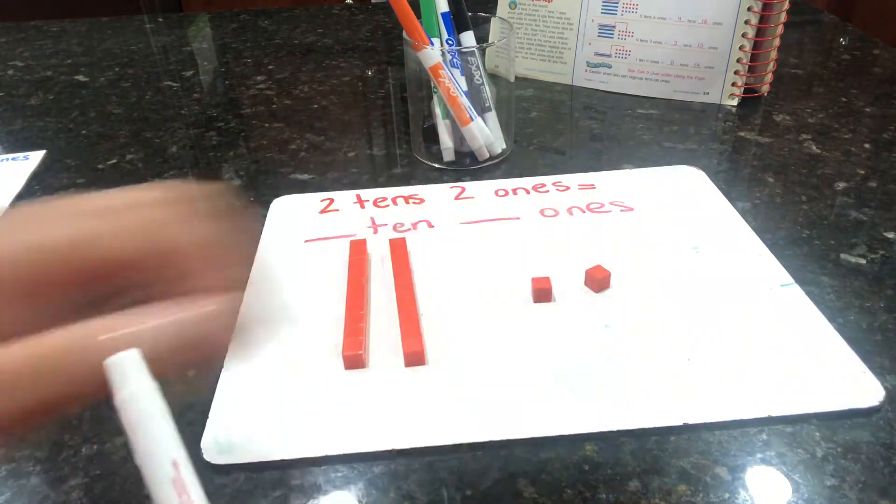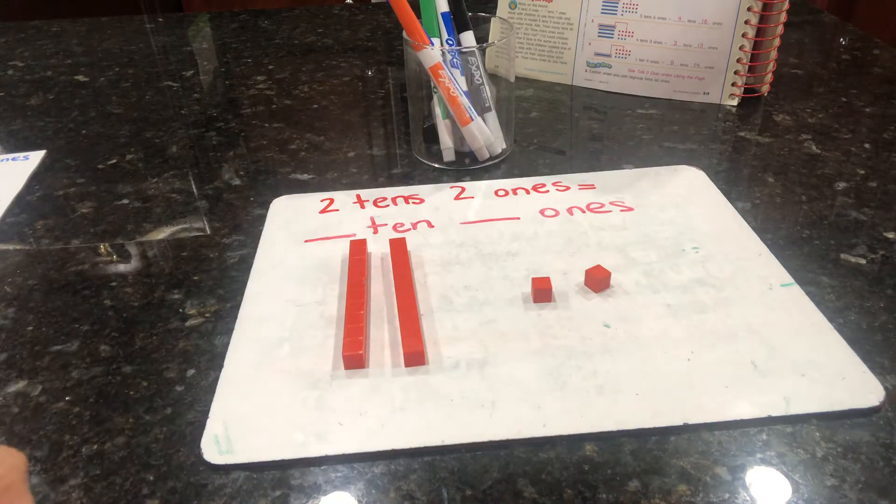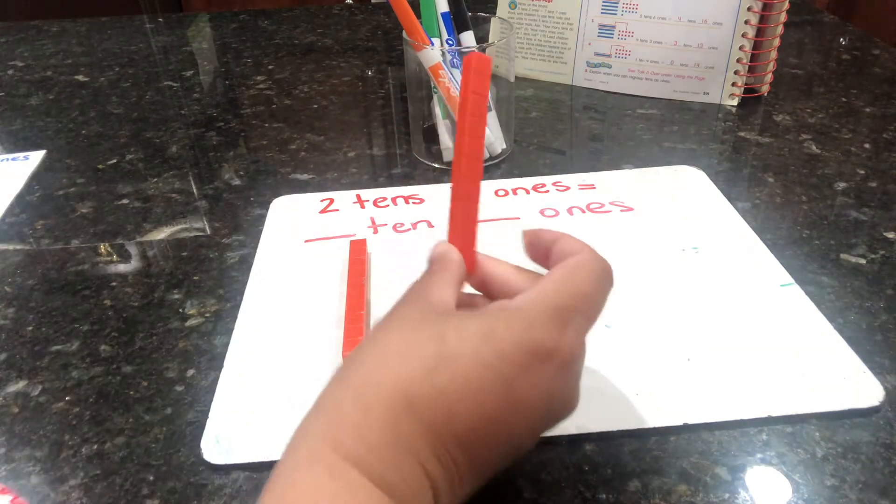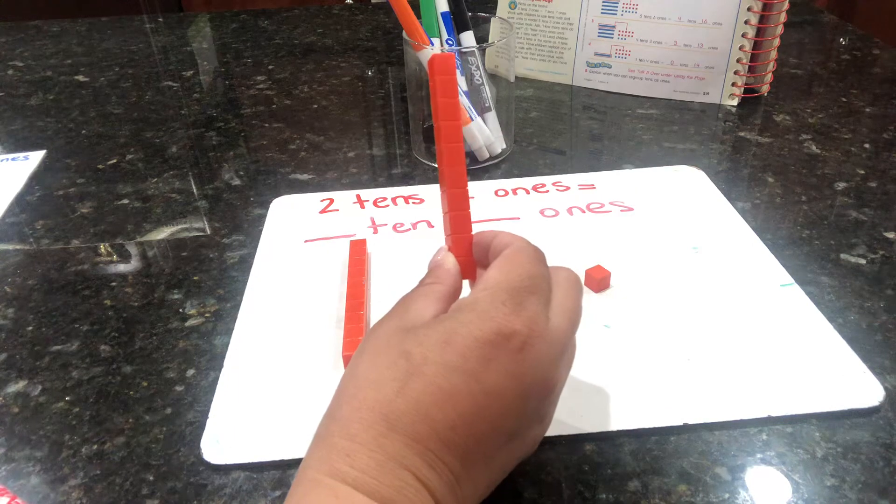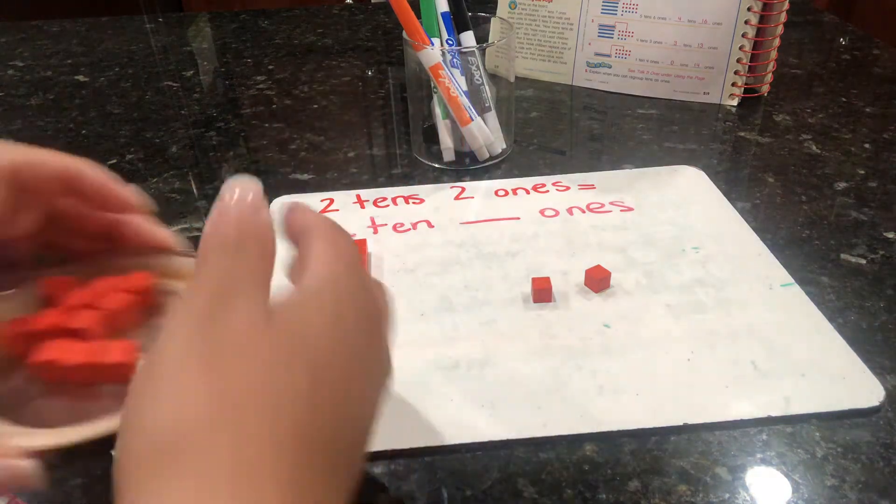Two tens two ones is the same as—we are going to change one of these ten rods for ten ones units.